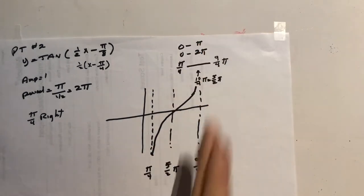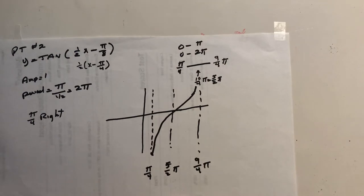So those are both going to be asymptotes, so put dotted line at the beginning and last one, and then you've got to find the middle one.